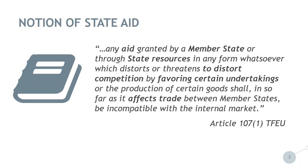State Aid, according to this article, is any aid granted by a member state or through state resources in any form whatsoever which distorts or threatens to distort competition by favouring certain undertakings or the production of certain goods, insofar as it affects trade between member states. State Aid is generally prohibited unless in cases where compatible with the EU internal market. All of the mentioned conditions in this article have to be fulfilled in order for State Aid to occur.